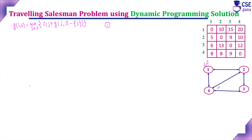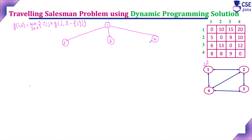The traveling salesman starts from city 1, considered as the source city. Starting from the source city, he has three choices according to the given graph. He may visit vertex 2, or he may visit vertex 3, or he may visit vertex 4. There are three choices, and we need to find the cost for each.